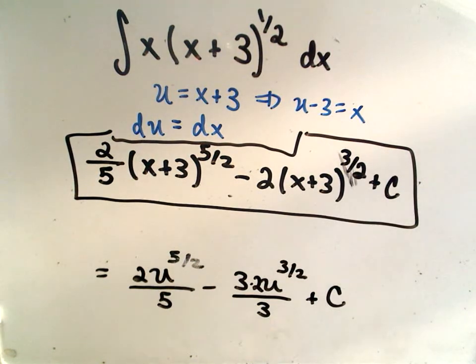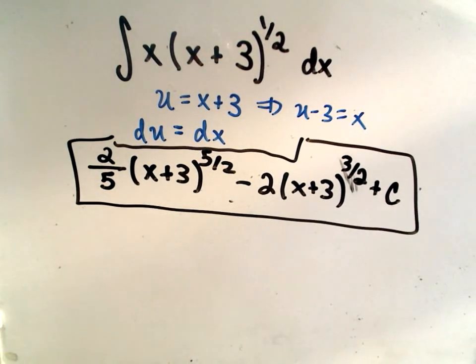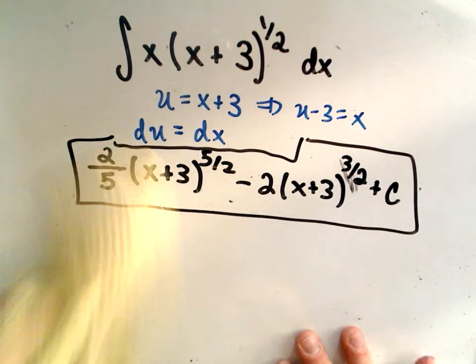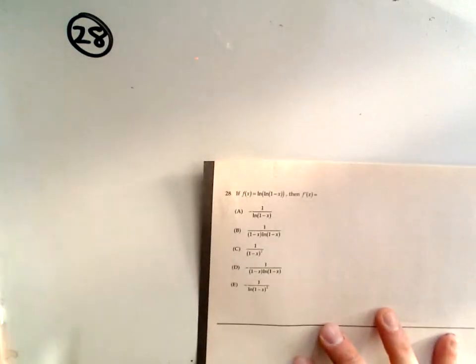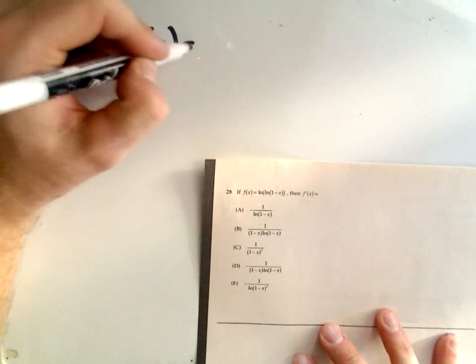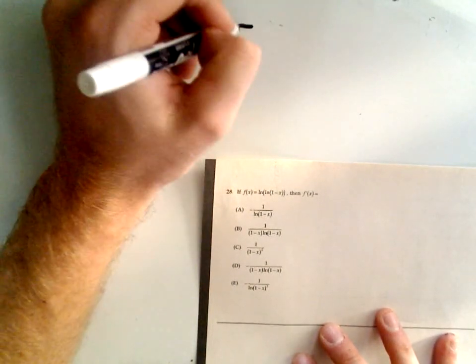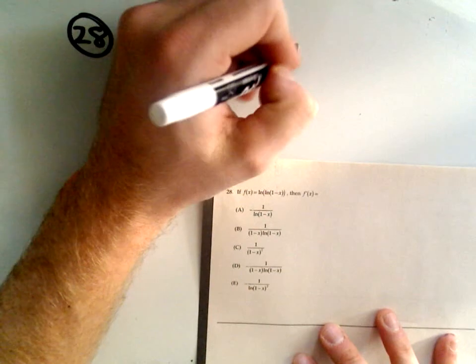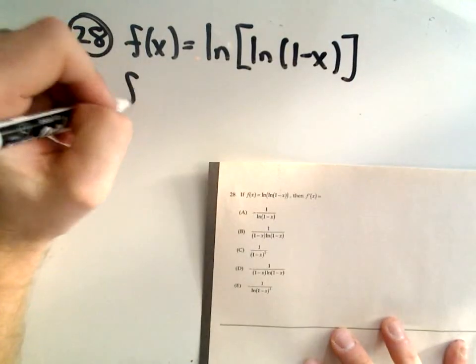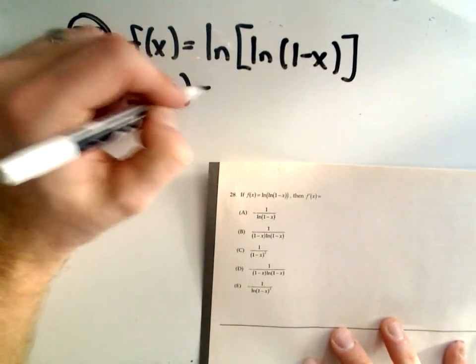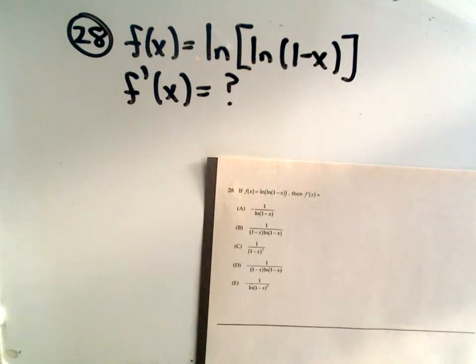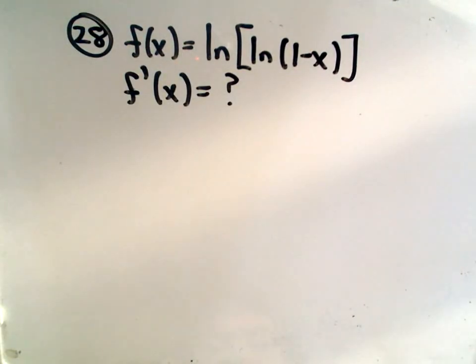Alright, last but not least in this section, number 28, the very last one. Number 28 says, another derivative problem. If f of x equals ln of ln of (1-x), then f prime of x equals what?